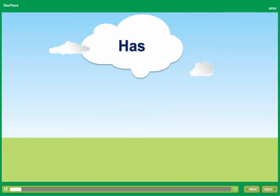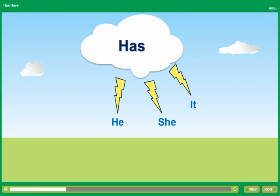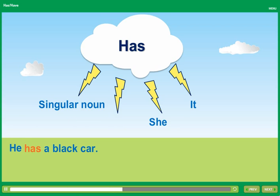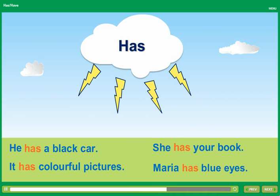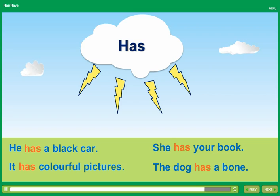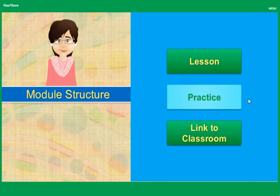Has is used with the third person singulars: he, she, it. Has is also used with singular nouns.